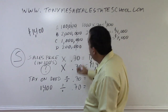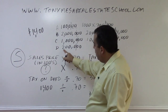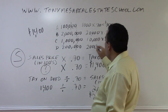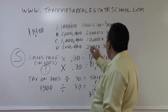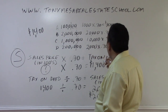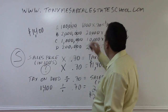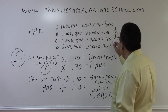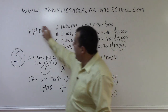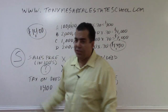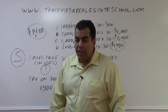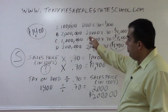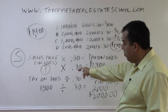The last answer choice ends with zero-zero, so you leave the number the way it is: 2,000 × 70 cents = $1,400. That matches what they gave you in the problem as the tax on the deed, so you know that's the correct answer choice. Use the answer choices if you get confused.